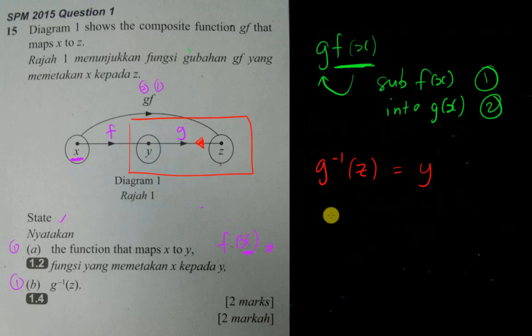So g inverse - if we say g(y), basically I will get z. So you can just imagine if I can move my g to the other side, it becomes inverse. So g inverse (z) basically will get back y also.